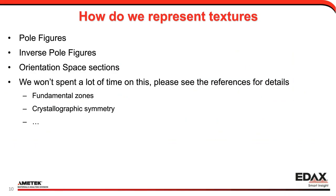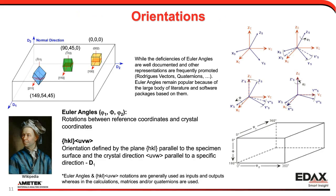So how do we represent textures? We usually use pole figures, inverse pole figures, or sections through orientation space. When we think of orientations, one of the common ways is with Euler angles, which describe the rotation from the sample reference frame to the crystal reference frame. The sample reference frame has to do with how your sample was processed or how it was put into the microscope to make your EBSD measurements, and you need to keep track of that reference system as it relates to the Euler angles or any other orientation description.